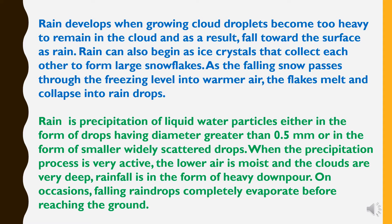Rain is precipitation of liquid water particles either in the form of drops having a diameter greater than 0.5 mm, or in the form of smaller, widely scattered drops. When the precipitation process is very active, the lower air is moist and the clouds are very deep, resulting in heavy downfall. On occasions, falling raindrops completely evaporate before reaching the ground.